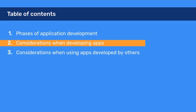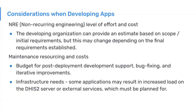Next, we'll discuss the considerations to take into account when developing applications. The first is non-recurring engineering level of effort and cost — the time and cost required to develop an application from scratch. The developing organization, which often involves professional software engineers, can provide an estimate based on scope and initial requirements; however, this estimate may change depending on final requirements. The second consideration is maintenance resourcing and costs. Budgeting for post-deployment development to support users, fix bugs, and iteratively improve the application is critical, as is considering infrastructure needs such as server or cloud computing resources.